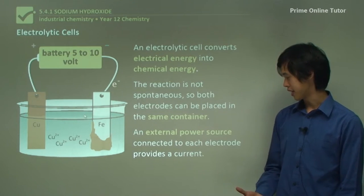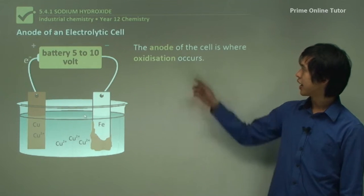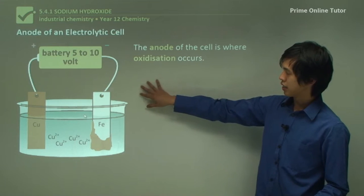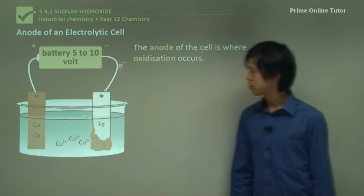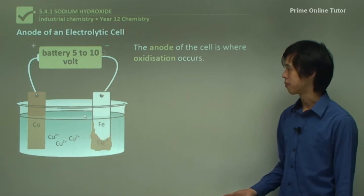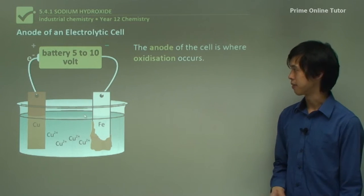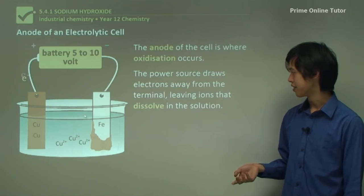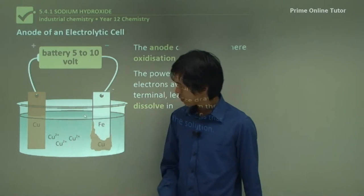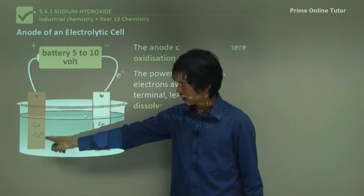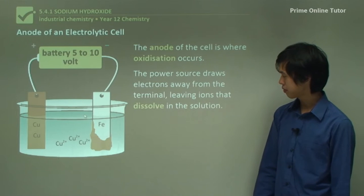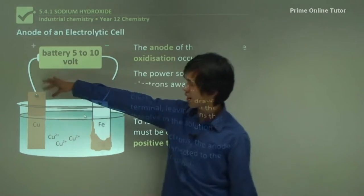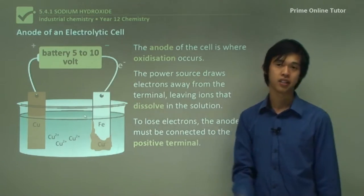An external power source is connected to each electrode, which provides the current. The anode of the cell is where oxidation occurs. In this case, Cu is the anode because it's releasing electrons and oxidizing. The power source draws electrons away from the terminal, leaving ions that dissolve in the solution — you can see the Cu forming Cu²⁺ going into solution. To lose electrons, the anode must be connected to the positive terminal, because the electrons will be attracted to that positive side.